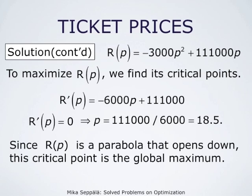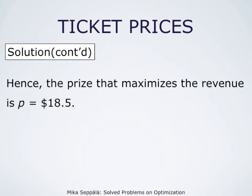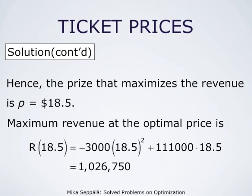We observe that the revenue function is a parabola that opens downward because the coefficient of the second-order term is negative. This means the only critical point is its global maximum. Therefore, the ticket price that maximizes the revenue is $18.50, and the maximum revenue at this optimal price can be computed by substituting 18.5 into the revenue function — we get just over $1 million.